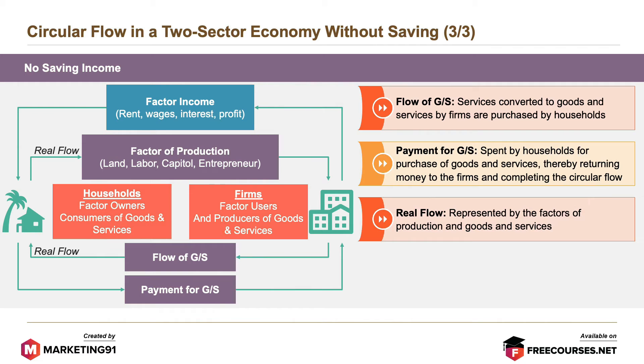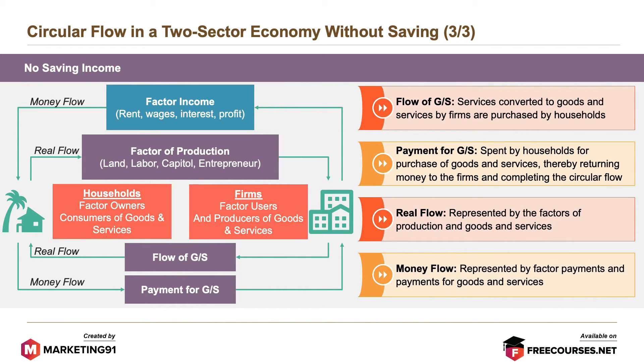Real flow is represented by the factors of production and goods and services. And money flow is represented by factor payments and payments for goods and services.